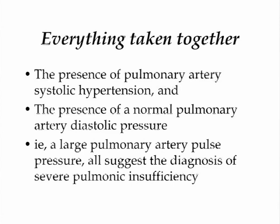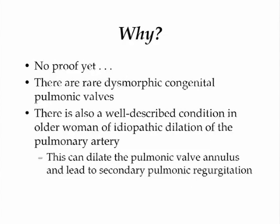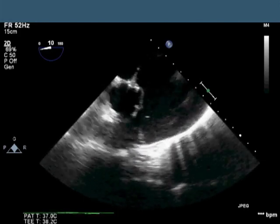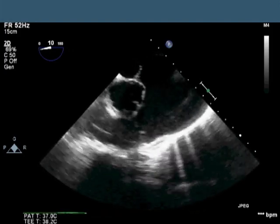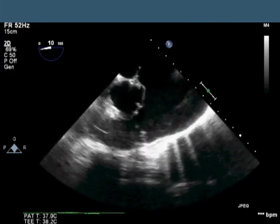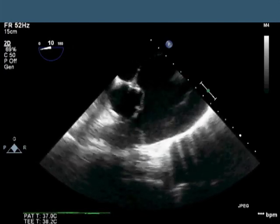What I think is going on here is that this is all because of severe pulmonic insufficiency. That explains why you have pulmonary artery systolic hypertension, yet the things you usually see when pulmonary vascular resistance is the primary cause — namely a high RV Tei index or a short acceleration time through the pulmonic valve — aren't present. I suggested to the referring cardiologist that he get a follow-up study like an MRI or TEE, but he hasn't done that yet. There are rare dysmorphic congenital pulmonic valves, and there is also a well-described condition in older women called idiopathic dilatation of the pulmonary artery, which can lead to annular dilatation and secondary pulmonic regurgitation. I have a next slide from another case showing a transesophageal echocardiogram where you can see the aortic valve in the middle, the pulmonic valve at about 5 o'clock, and a humongous pulmonary artery — so this condition does exist.